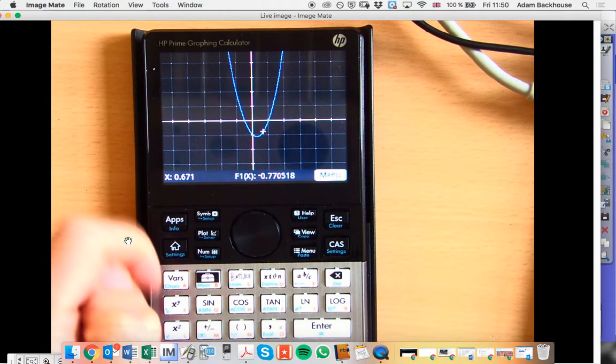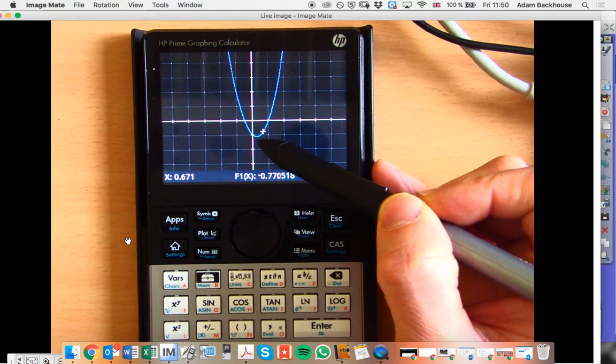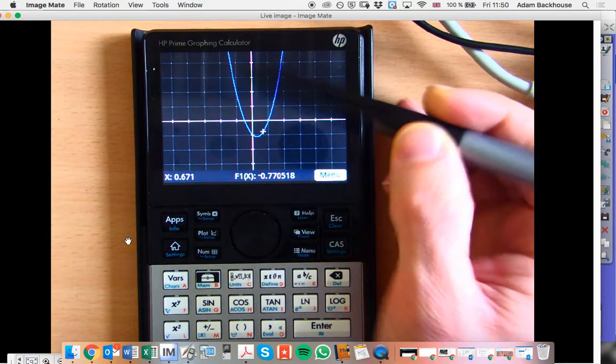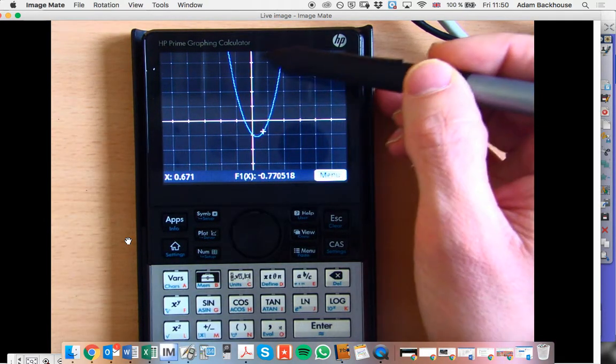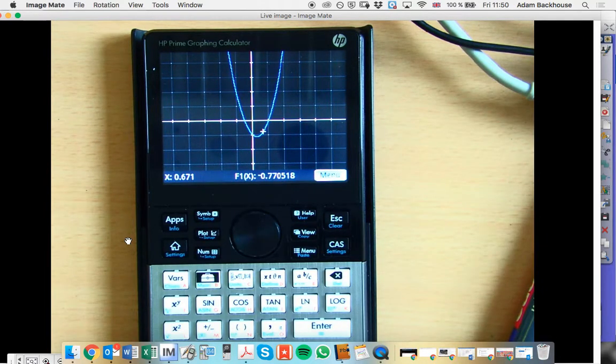We can see the vertex is down here. It's a minimum for this, and of course our axis of symmetry is going to go through the vertex. It will be a vertical line.